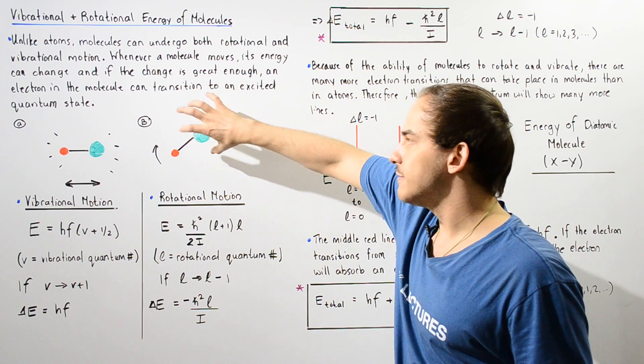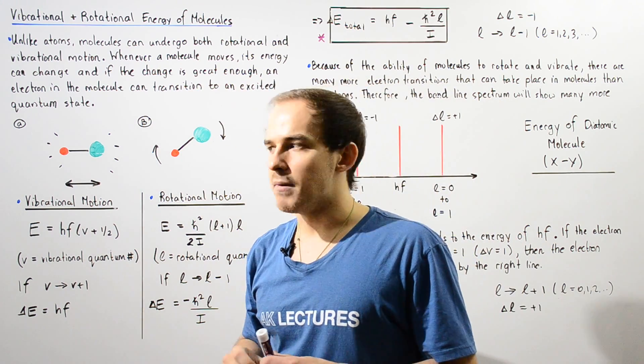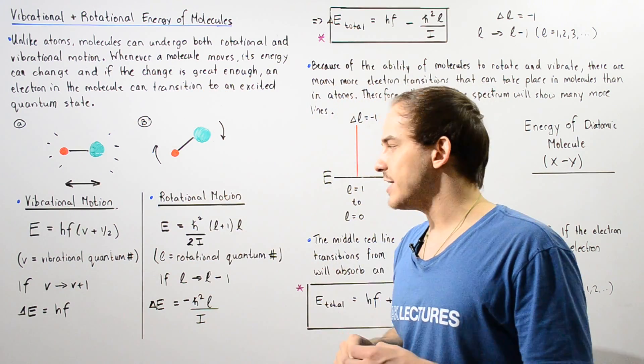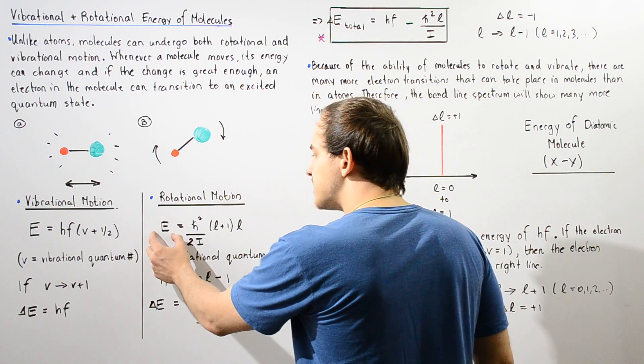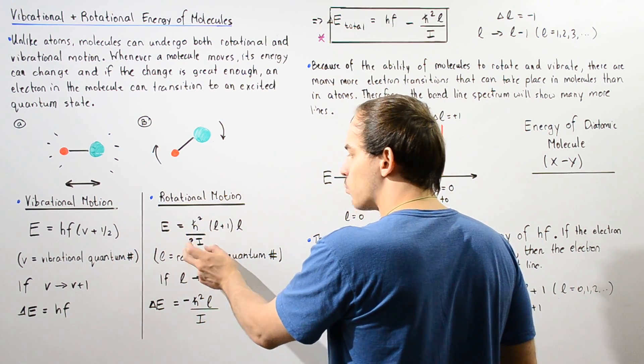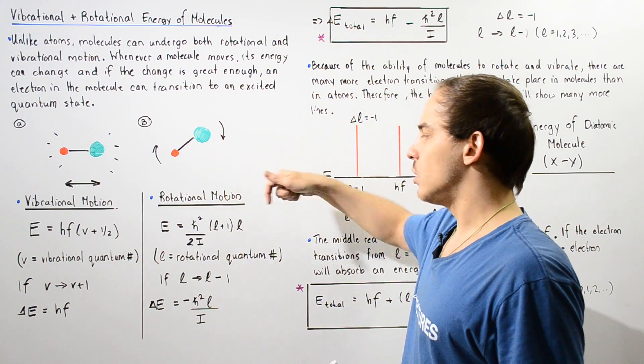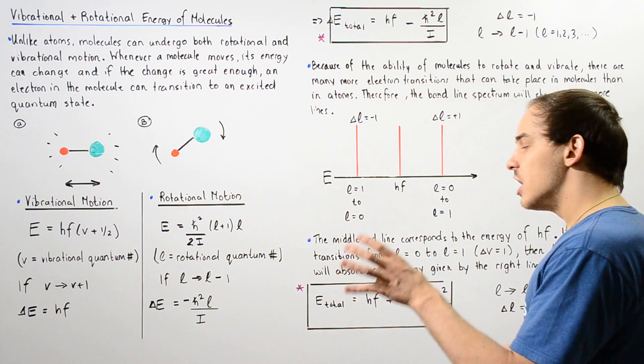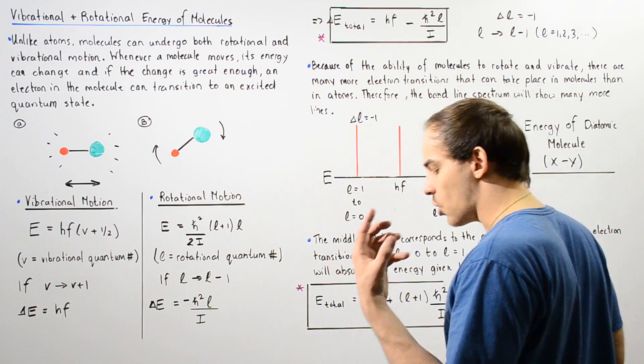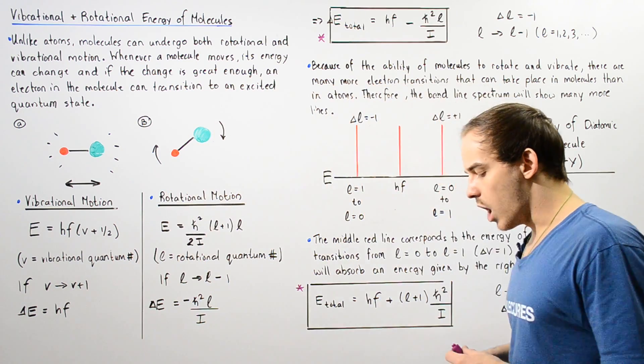Now likewise, we can define the rotational energy of our diatomic molecule as a result of the rotation given by this equation. So the rotational energy is given by h-bar squared divided by 2i, where i is the moment of inertia, multiplied by L plus 1 multiplied by L, where L is the rotational or angular quantum number. So L is also a number that begins with zero and increases by increments of one.